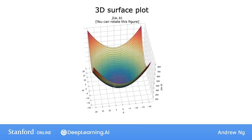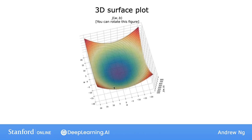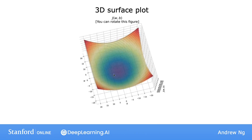I'd like to take this exact same function j, so I'm not changing the function j at all, and plot it using something called a contour plot.